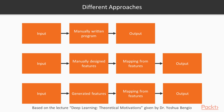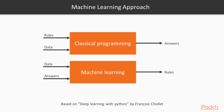Let's look more closely at the last two approaches. These approaches are very different from classic approaches. For the classic approach we use rules and data as input and answers as output. For the machine learning approach we use data and answers as input and we produce rules as output.